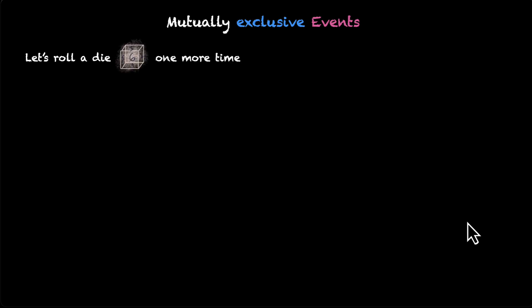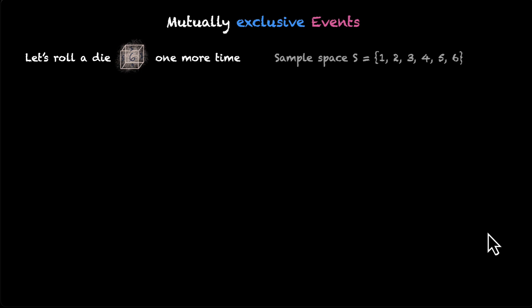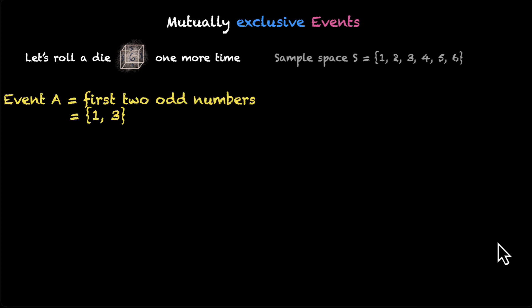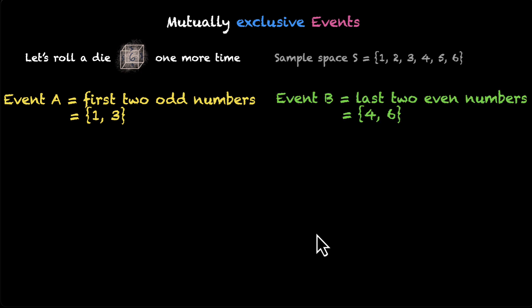Let's roll a die one more time. This is our sample space which has 1, 2, 3, 4, 5, and 6. Let's look at two events. The first one is event A, which is the first two odd numbers — that's 1 and 3. And event B contains the last two even numbers — that's 4 and 6.